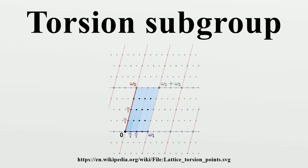In the theory of abelian groups, the torsion subgroup T of an abelian group A is the subgroup of A consisting of all elements that have finite order. An abelian group A is called a torsion group if every element of A has finite order, and is called torsion-free if every element of A except the identity is of infinite order.